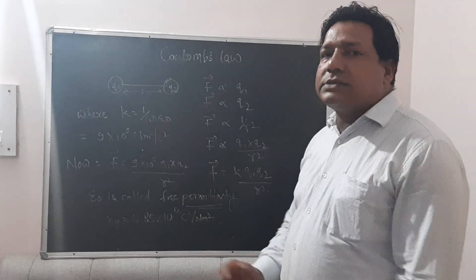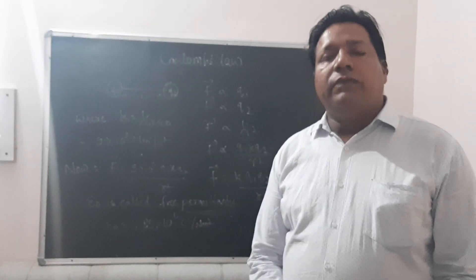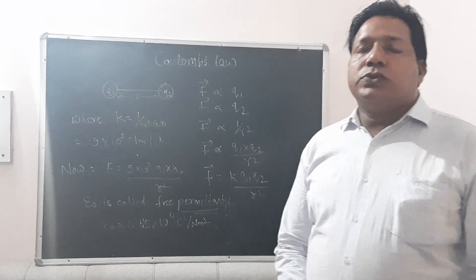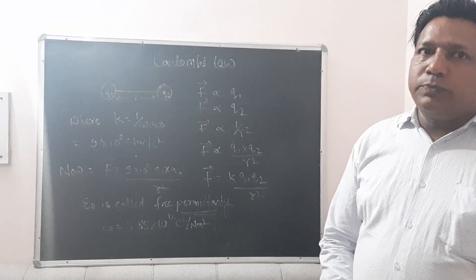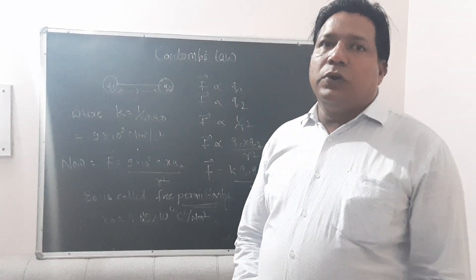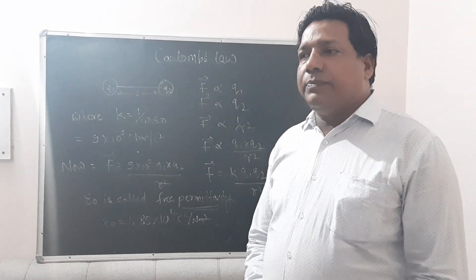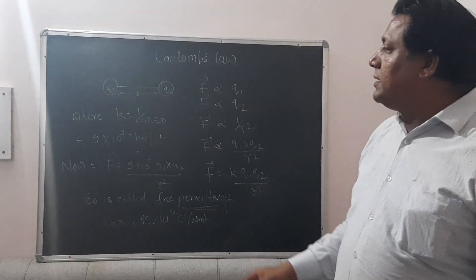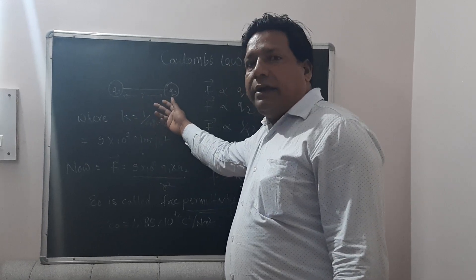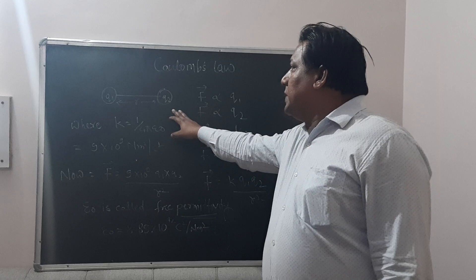Welcome students. Today we are going to discuss a new topic called Coulomb's Law. In 1785, Sir Coulomb discovered a law which gives some idea about the force of attraction and repulsion between charged particles. In this law, both the charged particles are assumed to be at rest. We can consider the charged particles by their magnitudes q1 and q2, which are separated by a distance r.